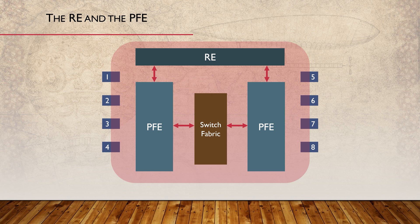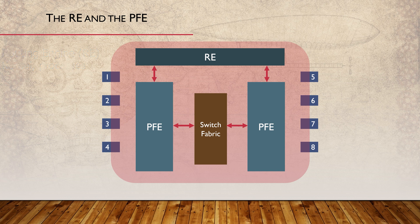Can you see how the data plane is isolated from the control plane here? The RE has a few tasks. One of these is to run Junos. The RE contains the Junos kernel and runs the processes that manage chassis resources. We'll take a look at the processes in the next video. Another task of the RE is to manage the chassis, which includes monitoring its health — checking temperature, fan speed, alarms, packet counters, and so on. It also has a two-way relationship with the PFE.